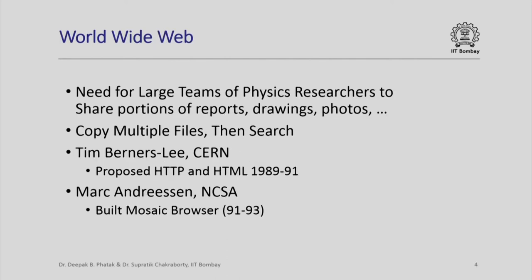The world wide web has a very interesting background history. There were a number of physics researchers at CERN in large teams who needed to share portions of data — reports, drawings, photos, etc. — for their scientific work. Unfortunately, the only mechanism available at that time was copying multiple files. All these details were available in computer-readable format, but they were all independent digitized drawings, independent reports, independent photographs, and so on. Researchers had to copy multiple files, then search within those files, which was a very time-consuming affair.